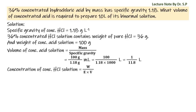The concentration of concentrated hydrochloric acid solution equals w divided by e times v, where w is mass of solute in grams, e is the equivalent mass, and v is the volume of solution in liters. That is equal to 36 divided by 36.5 into 11.8, which equals 11.638 N.